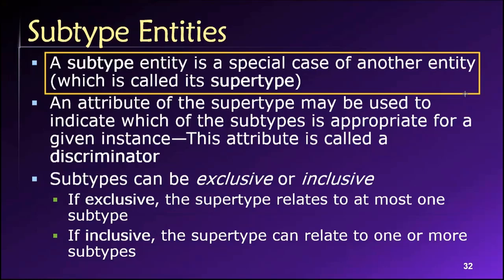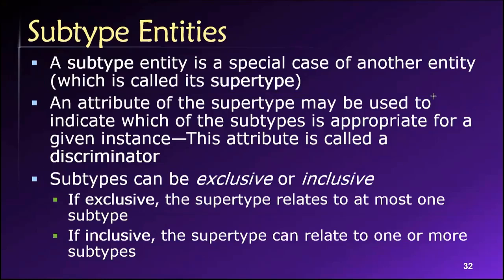At a university, a common way of differentiating between the different special types of people in the community would be to label some of them faculty — those are the people who teach — and then there are staff, those are support personnel and administrators who don't teach but are critical to operations. And students. So we could divide the people at a university into three different subtypes: students, faculty, and staff.